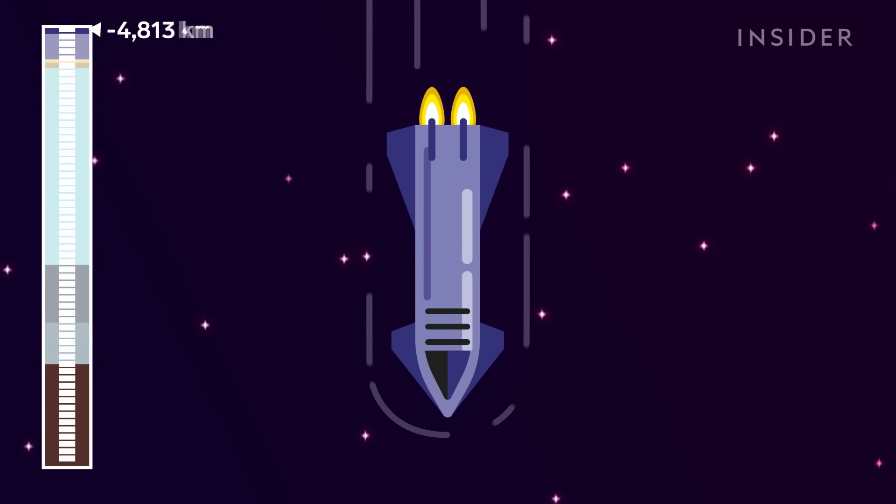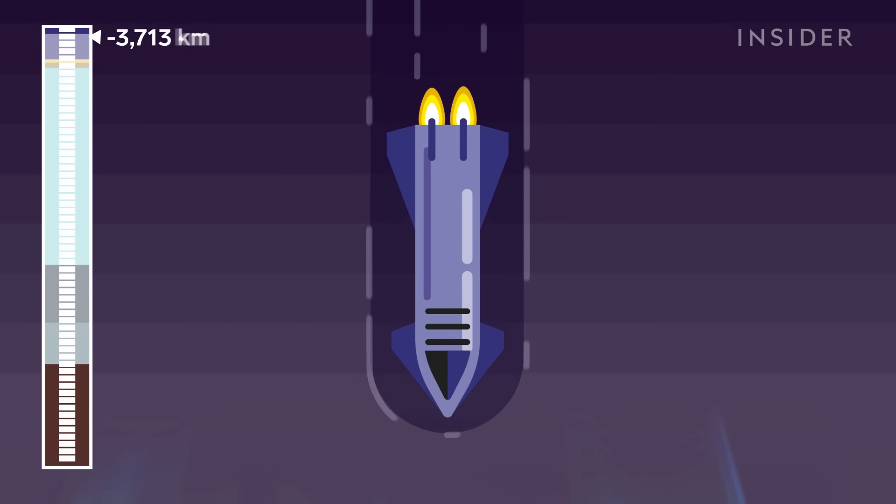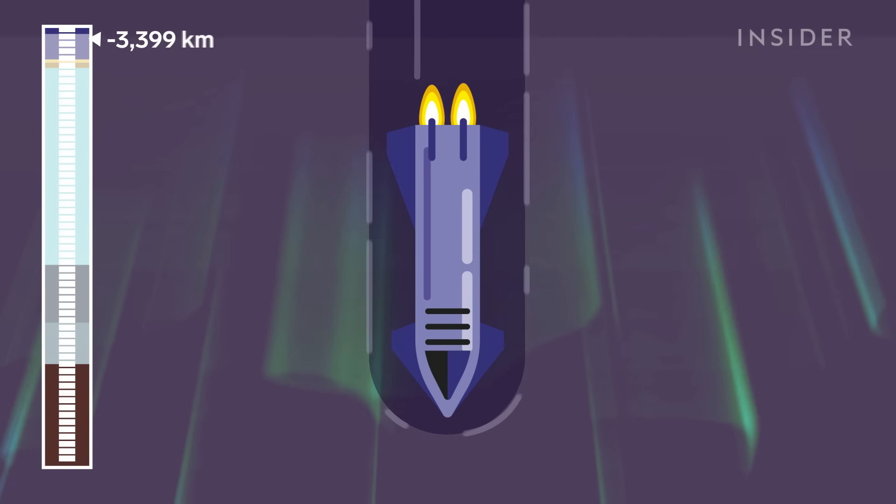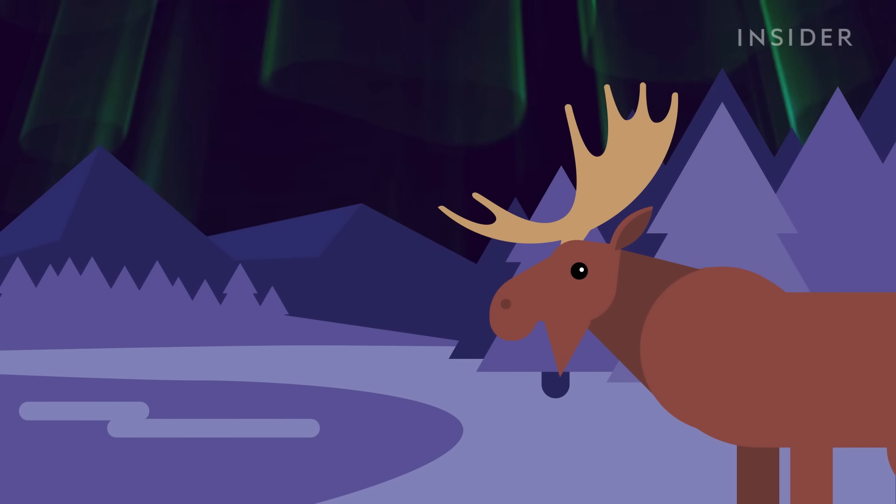4,000 kilometers above the surface, we hit Saturn's upper atmosphere. As we plummet through the North Pole, we'll be treated to the sight of a magnificent aurora, like the ones we see in Alaska.